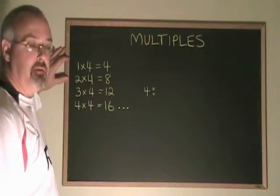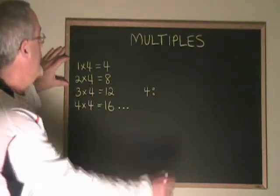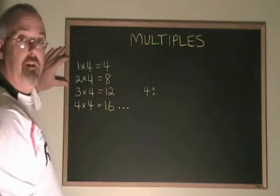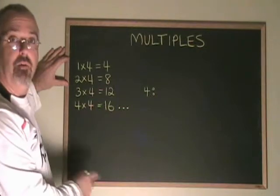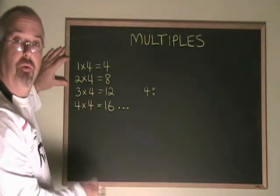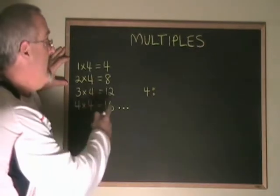When we are learning our times tables, we become familiar with this: 1 times 4 equals 4, 2 times 4 equals 8, 3 times 4 equals 12, 4 times 4 equals 16, and it goes on.